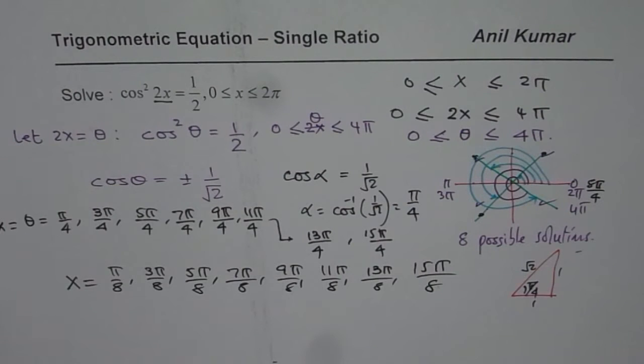And graphically if you see, then what we are looking for in this particular case is whenever you have 2x, then we have got two waves within 2π. Since there are two waves within 2π, we will get this kind of solution. I hope that helps.